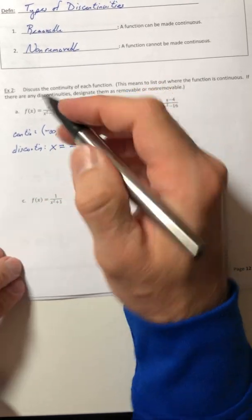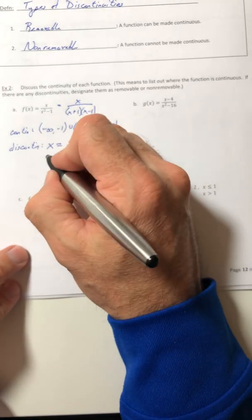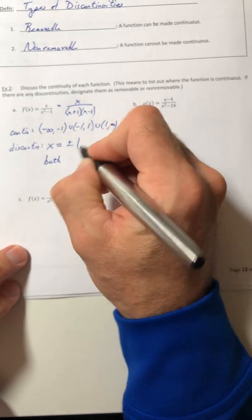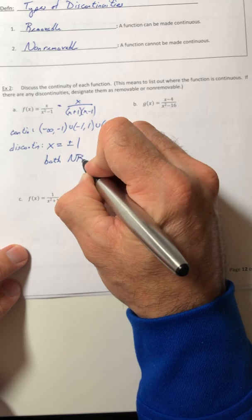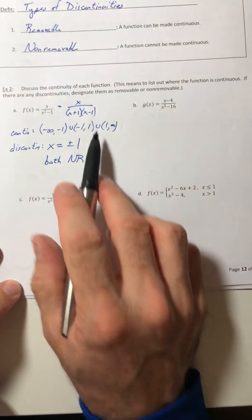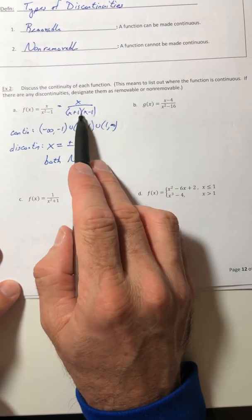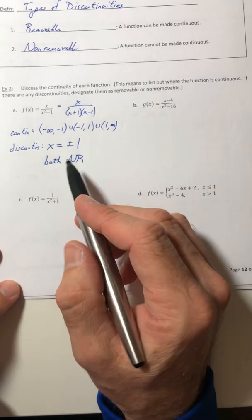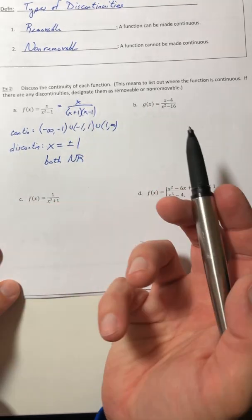So those are your discontinuities. Discontinuity at positive and negative 1, and both of them are non-removable. You can't get any of these factors to cancel, so you cannot remove them from the function.